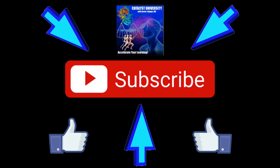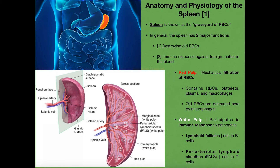Welcome back to Anatomy and Physiology on Catalyst University. My name is Kevin Tokoff. In this video we're going to discuss the anatomy and physiology of the spleen. We'll cover some very basic stuff about the spleen first — in past videos we talked about one function being the graveyard of red blood cells — and then we'll discuss its other function, which has to do with the lymphatic system and the immune system.